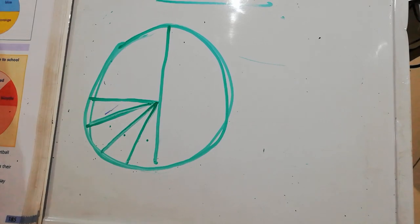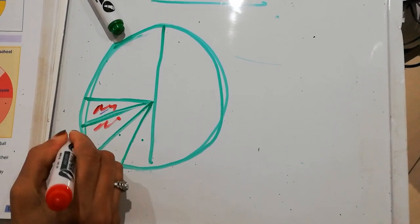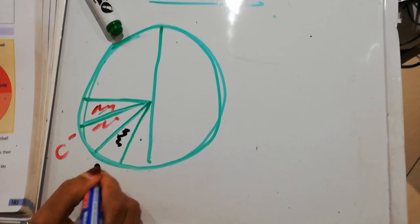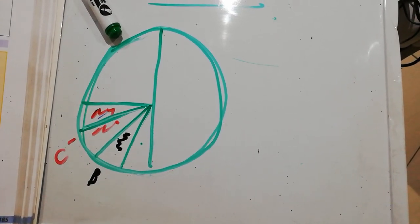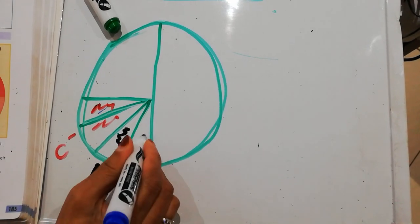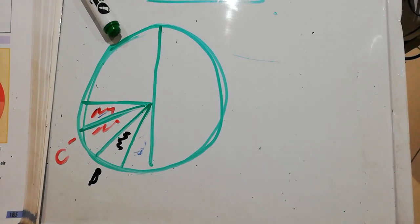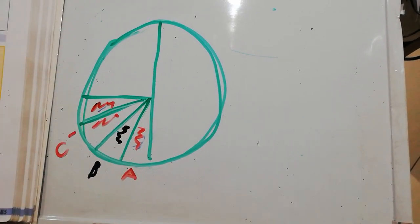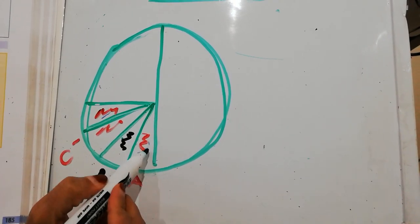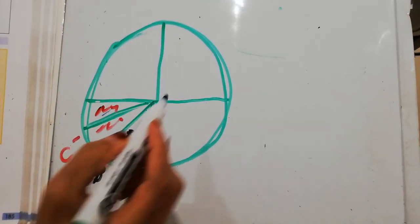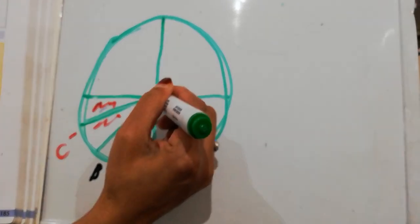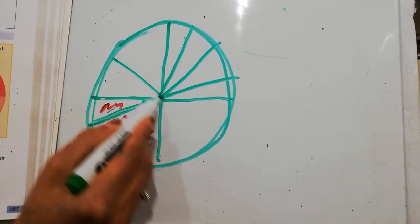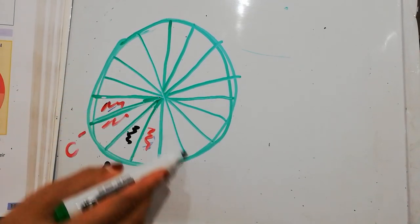And then we're going to use these lines as one, two, three, four to create the rest of the pie chart. So if you look also, this here is your cricket. And this here is your boxing. I'm trying to get this blue to work, but it doesn't want to. So this here is your athletics.